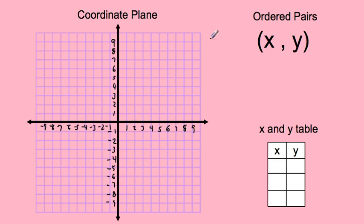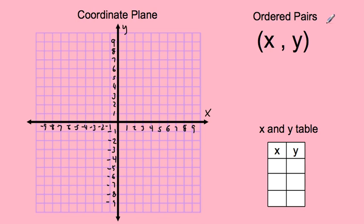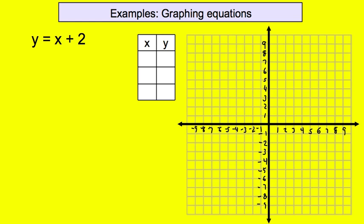Here's our vocabulary for today. A coordinate plane is just the big graph — the big grid — with zero in the middle, and two number lines: one going right and left, and one going up and down. Positives are on top, negatives on the bottom. The axis that goes side to side is x, and the one that goes up and down is the y axis. We'll work with ordered pairs x and y, and an x-and-y table, also called an input-output table.